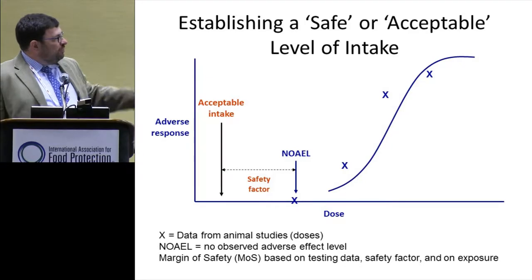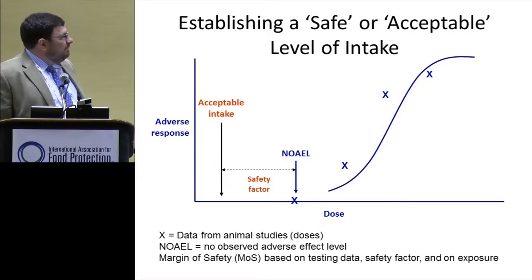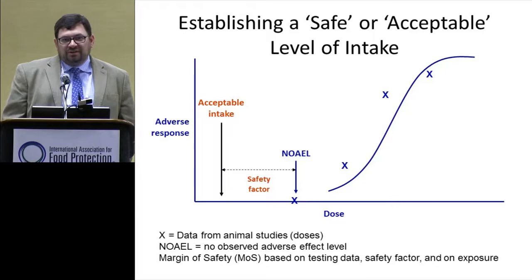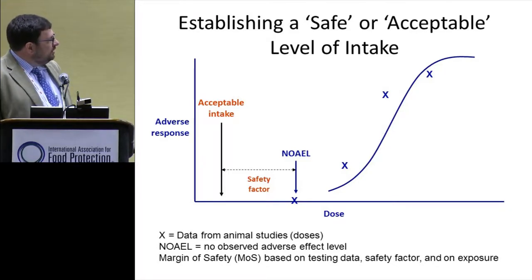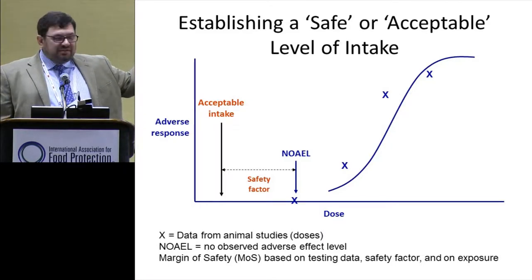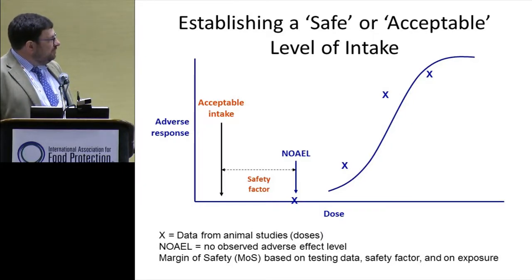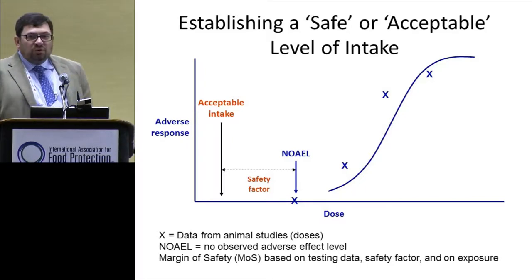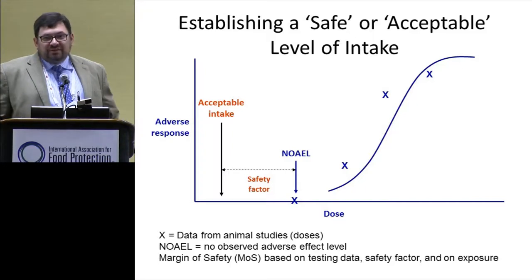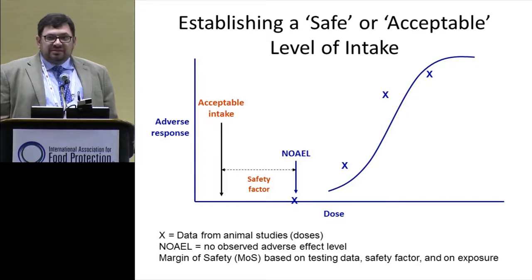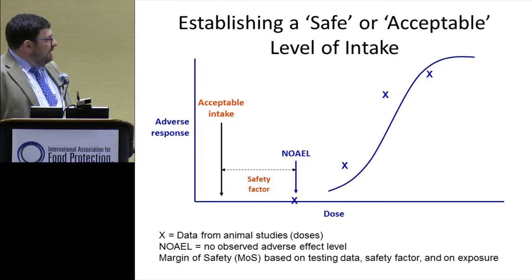Before I start saying anything about flavors, I just want to put this slide up to say this is essentially what we'd like to do for pretty much every flavoring substance if it was a perfect world. On the right side of the slide, we would do a tox study of some type, feed substances to animals, identify a dose level where we didn't see anything adverse — a no observed adverse effect level. Knowing what we know about exposure, we'd apply an appropriate safety factor. If that exposure is at or below an acceptable level of intake, we don't have any concerns at all.